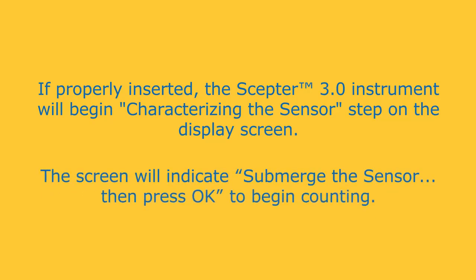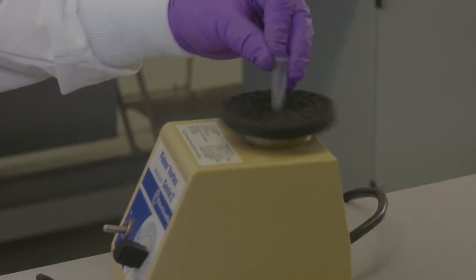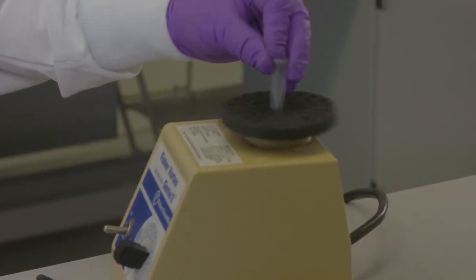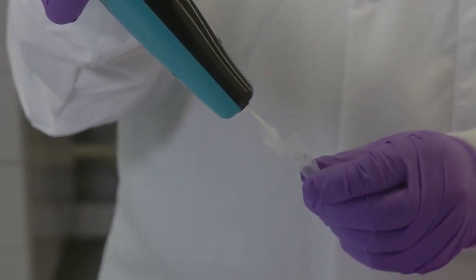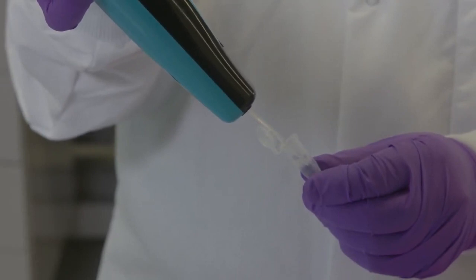The screen will indicate, submerge the sensor, then press OK to begin counting. Once the test sample is mixed well, open sample lid and insert the sensor tip to the bottom of the tube, making sure it's not resting on the bottom and press OK to start test.